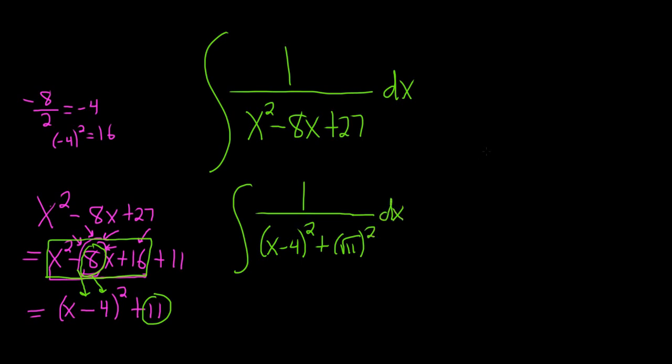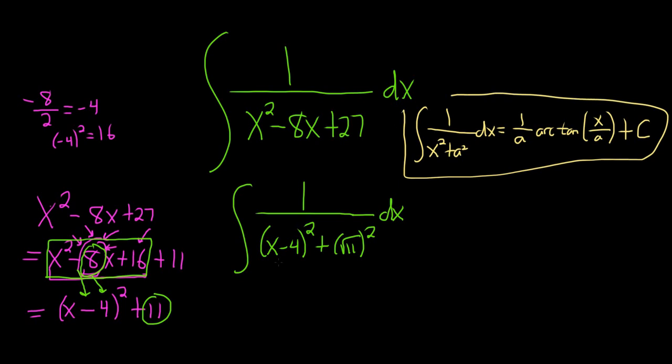Okay, let me refresh your memory on the formula. Maybe it's been a while since you've seen it. So it's 1 over x squared plus a squared dx. This is equal to 1 over a arctangent. This is one of those formulas that you should just know in general. It's worth learning this formula. It's so useful.